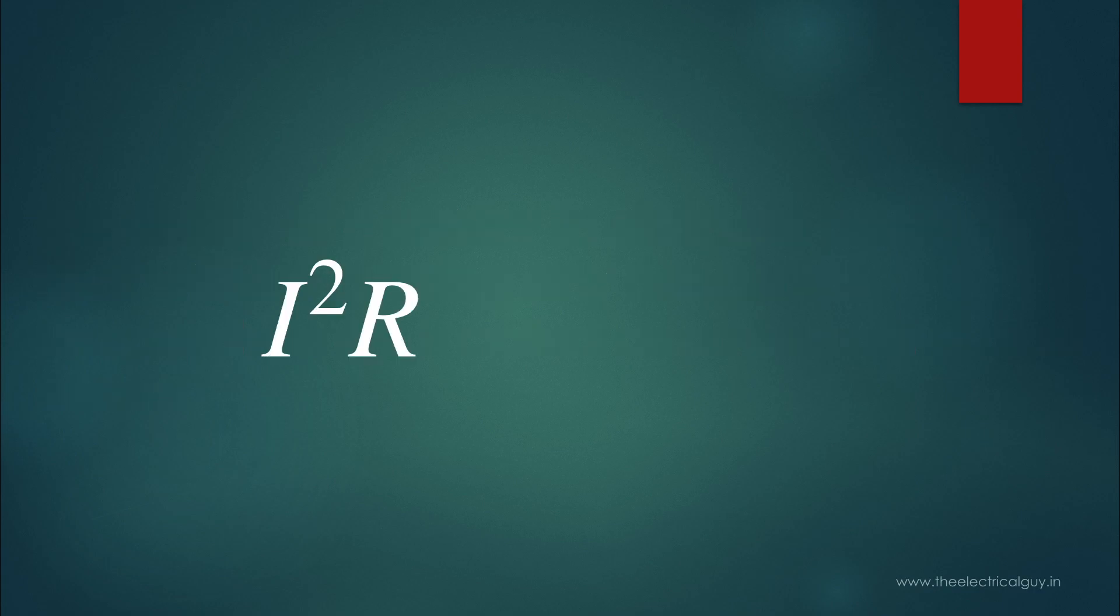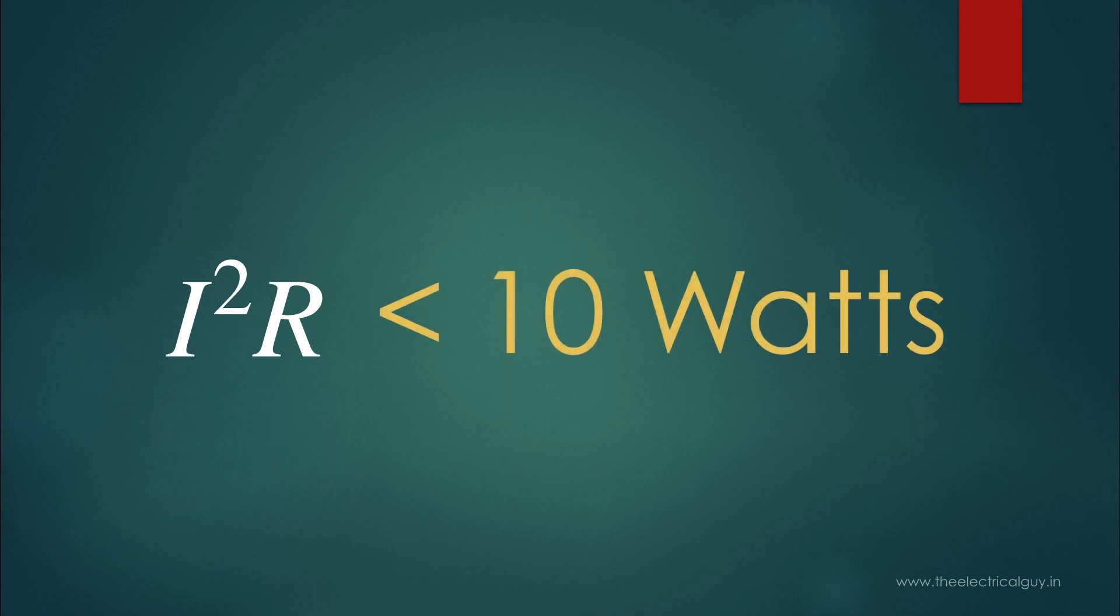Power rating is given by simple I square R or V square by R. So in our example, as the power rating is mentioned as 10 watts, which means the I square R loss should be within 10 watts.